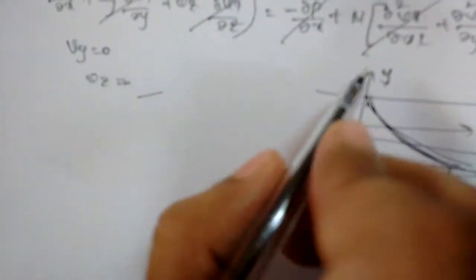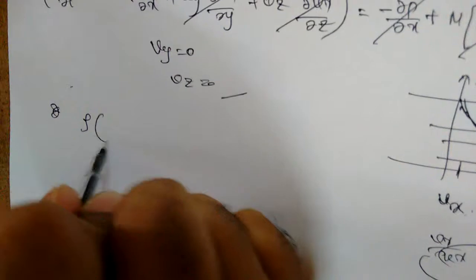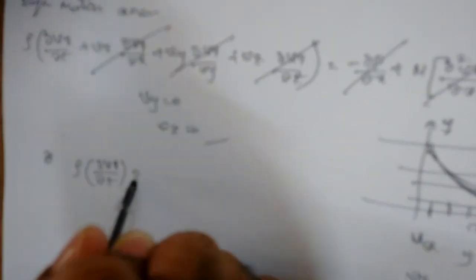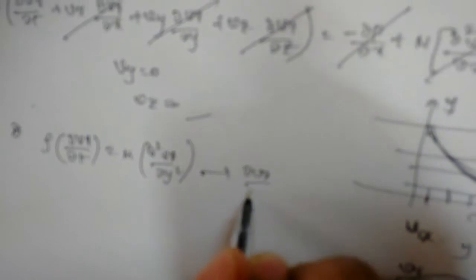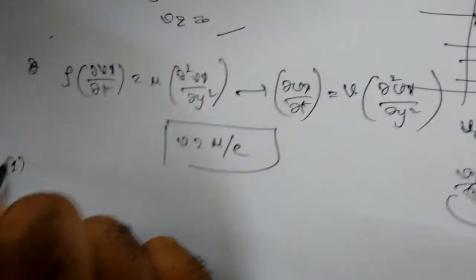After applying all simplifications, we get: ρ ∂vx/∂t = μ ∂²vx/∂y², which can be written as ∂vx/∂t = ν ∂²vx/∂y², where ν = μ/ρ is the kinematic viscosity.